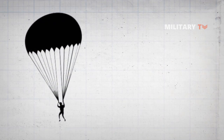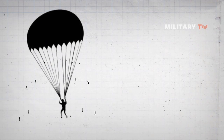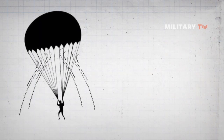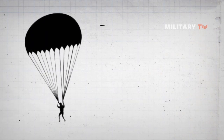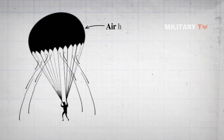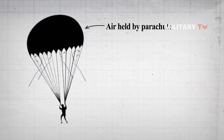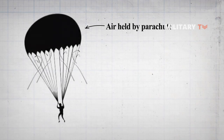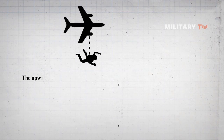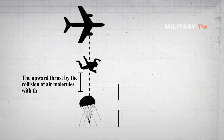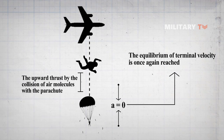Enter the parachute. It spreads out over a huge area, causing a falling person to displace much more air as they fall. Since more air molecules are being shoved down by the fabric of the parachute, the parachute and the person attached to it get pushed upwards in return. The equilibrium of terminal velocity is once again reached, but this time it's a velocity that's survivable — all because of the drag of the parachute.